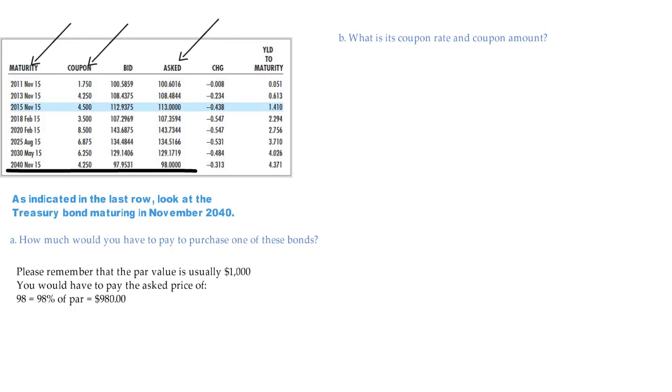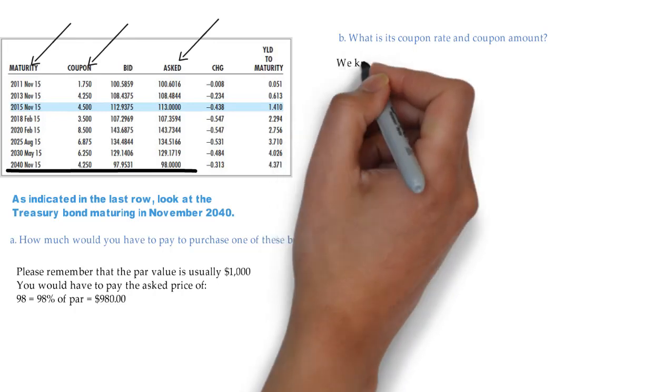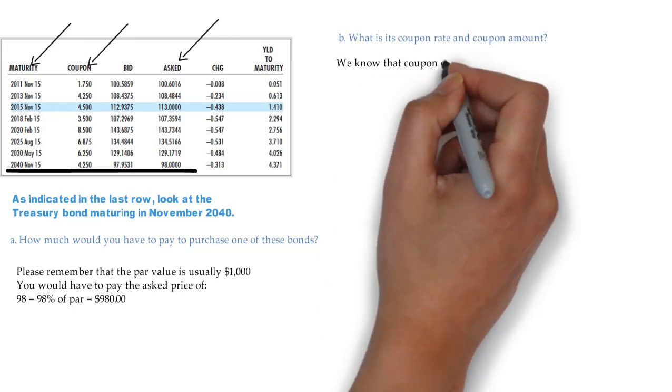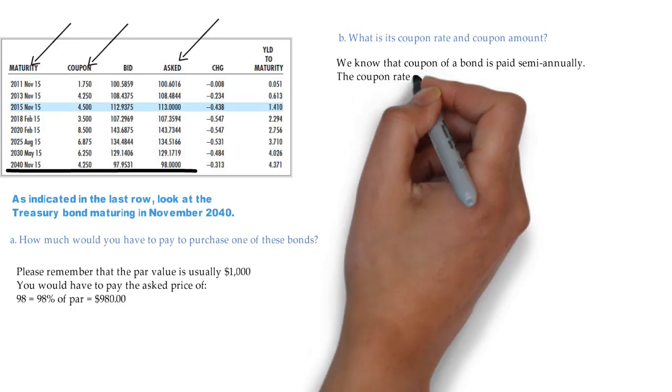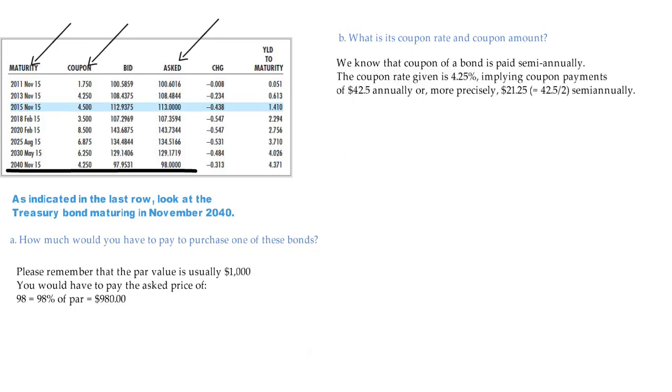Second question. What is its coupon rate and coupon amount? We know that coupon of a bond is paid semiannually. The coupon rate given is 4.25%, implying coupon payments of $42.5 annually, or